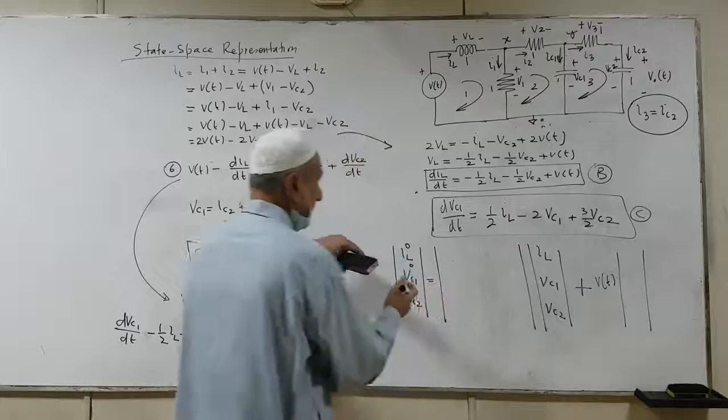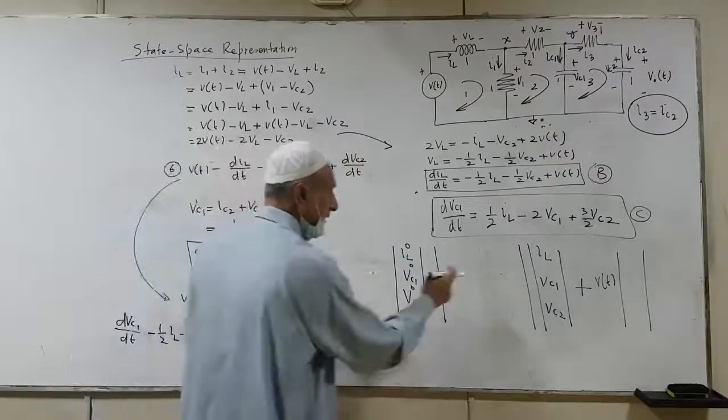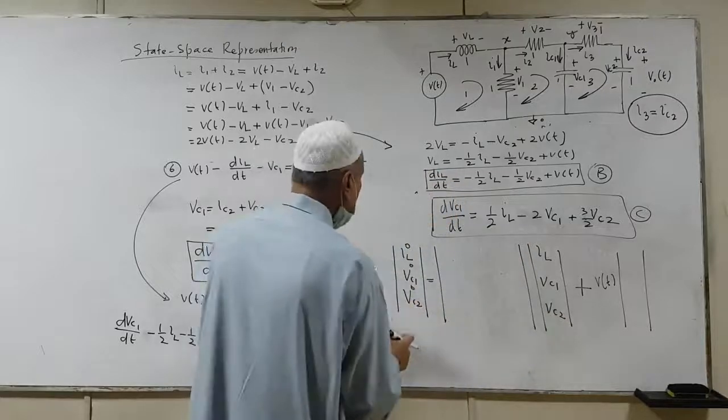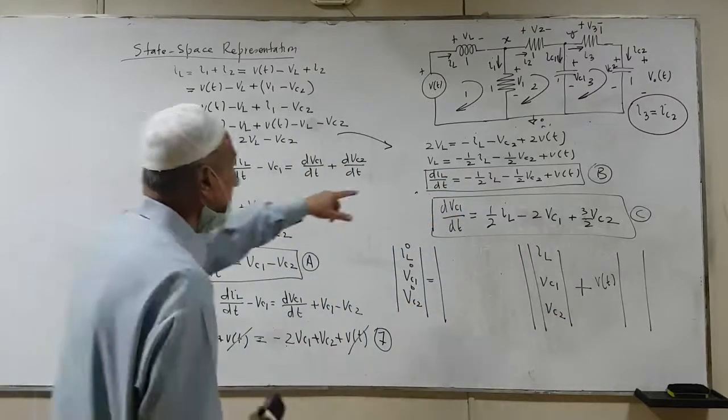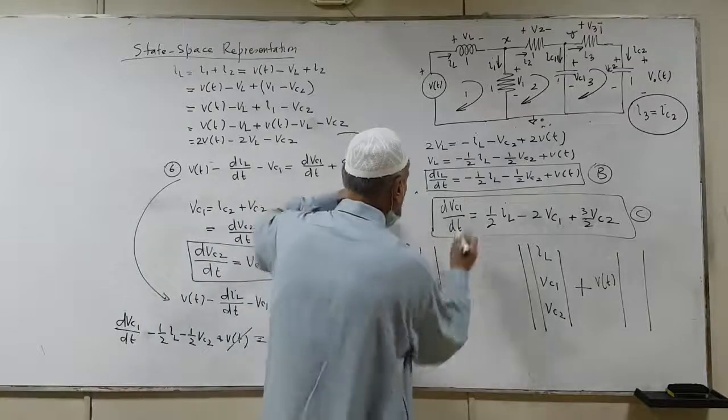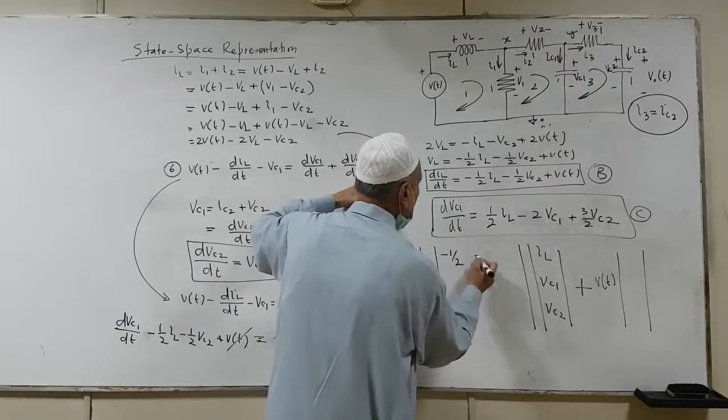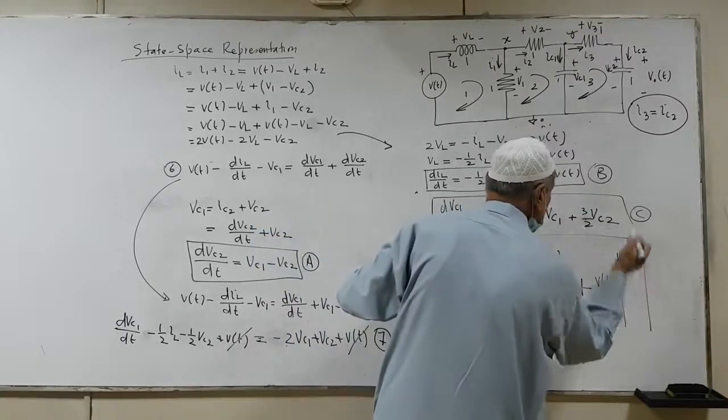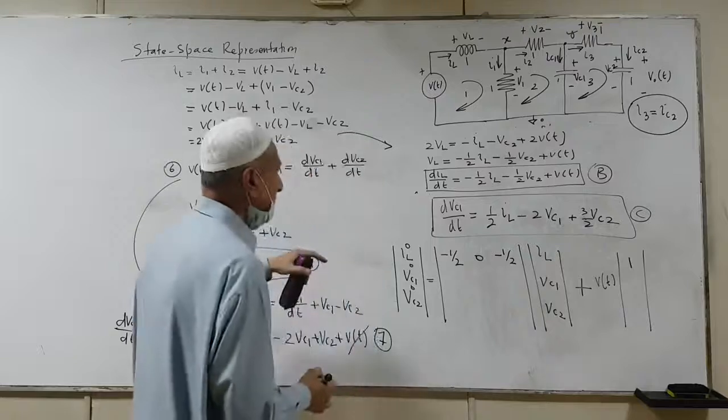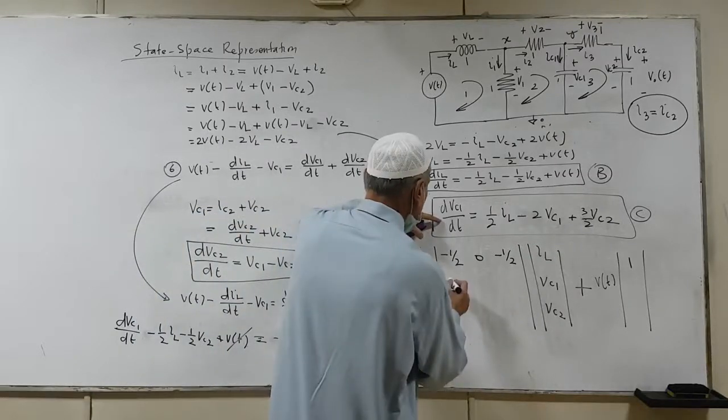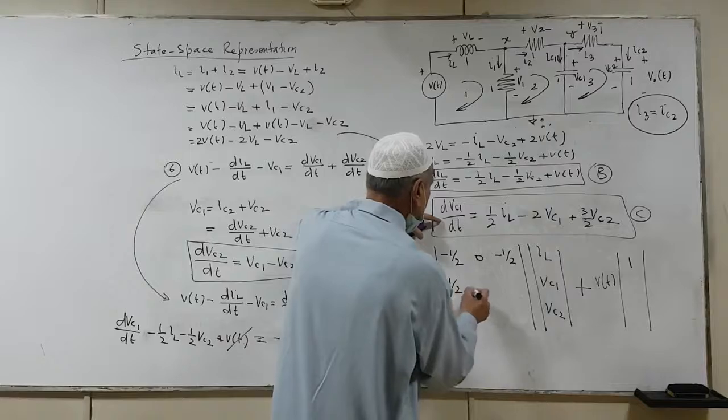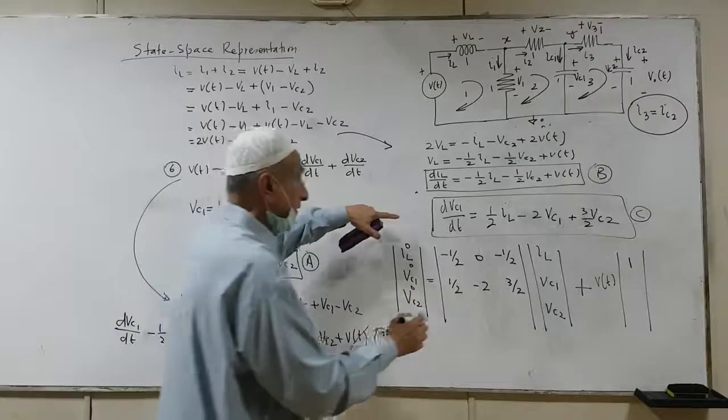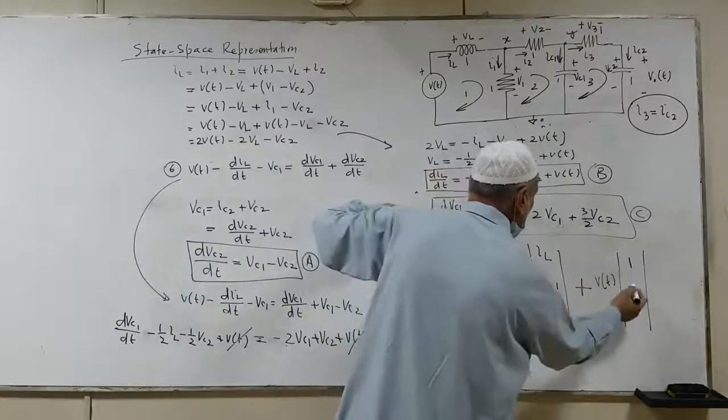So let's form. We have to write coefficient as IL first, Vc1 second, and Vc2 third. So starting with this equation, this will become our first equation. So we have minus 1 over 2, coefficient of IL, 0, and we have minus 1 over 2, and then there is a Vt whose coefficient is 1. Similarly, Vc1, over here, we have 1 over 2, then we have minus 2, then we have 3 over 2. Please do check the calculations anyhow. And there is no Vt, 0.